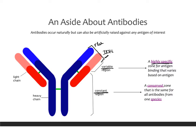In contrast, the constant region is a highly conserved zone, meaning it's the same for all antibodies from one species. All antibodies from a human source will have the same Fc region — whether the antibody is against the flu, measles, or tetanus, it always has the same constant region. Similarly, antibodies made in a mouse all share the same mouse constant region. But human Fc and mouse Fc are different from each other. The variable region up top, however, is always specific to whatever that antibody is made against.